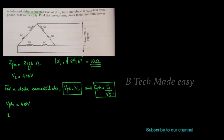Vph is equal to VL, which is 400 volts. Iph equals Vph divided by Zph, which is 400 divided by 10, giving Iph equal to 40 amperes. Then line current IL equals Iph into root 3, which gives 40 into root 3 equals 69.28 amperes.